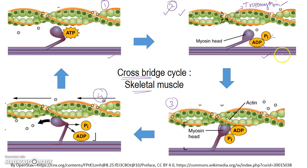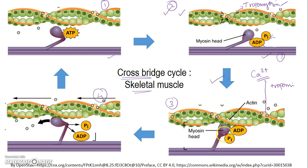At the relaxed state, once the tropomyosin moves away due to the presence of calcium — calcium binds to troponin and moves tropomyosin away — the myosin head can bind to actin and cause a power stroke. The contraction begins; the myosin binds and produces a power stroke, generating force. The actin is pulled towards the myosin. From here, the myosin still has a higher binding affinity to actin as long as it remains bound to ADP and inorganic phosphate.